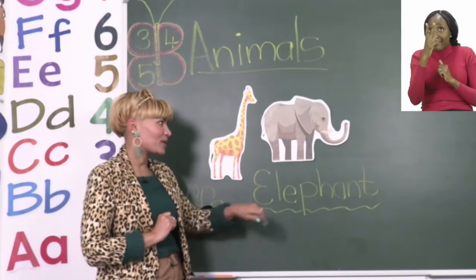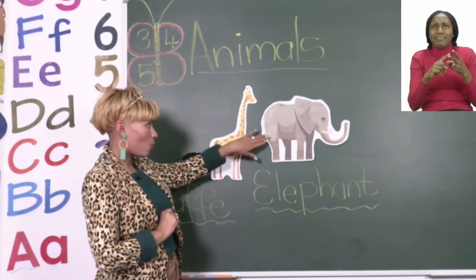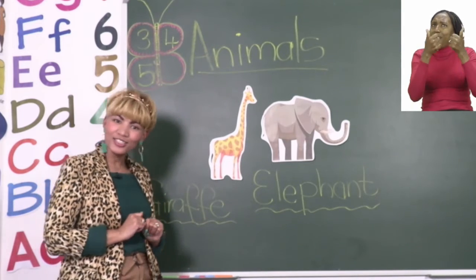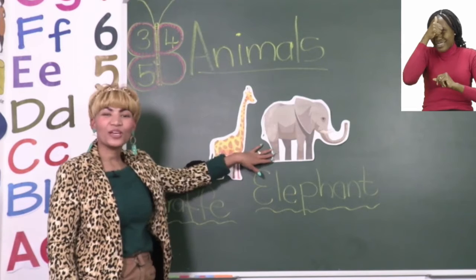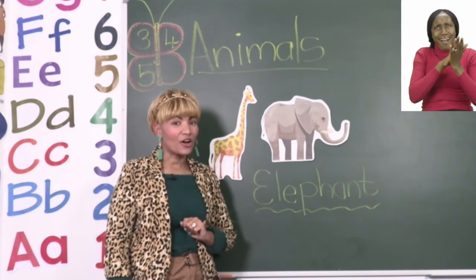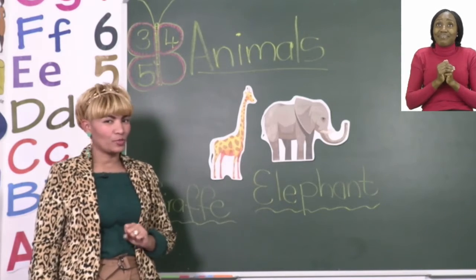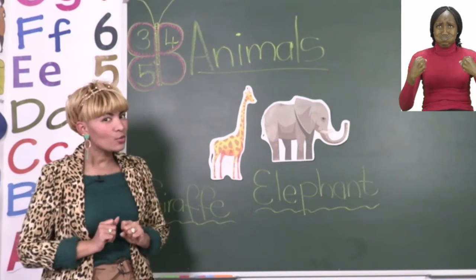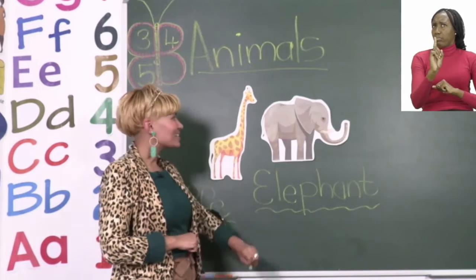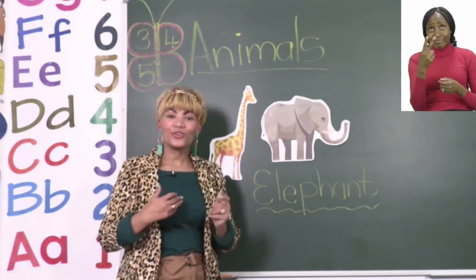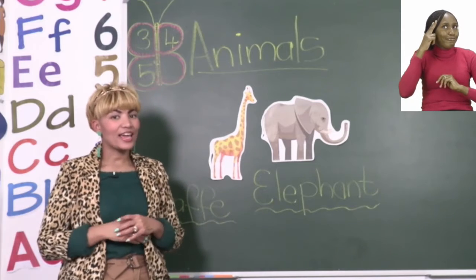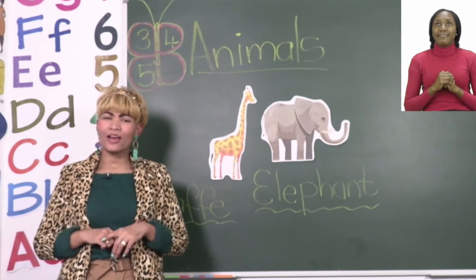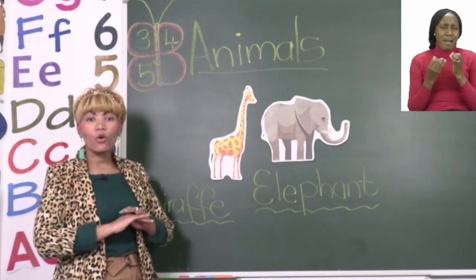Let's look at the second picture. Can you tell me what animal this is? Excellent boys and girls, you are so smart! This is a picture of an elephant. We all know the elephant to be a big and strong animal. As you can see on this picture, you can go ahead and color the elephant gray.